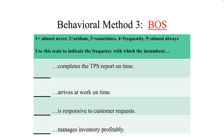The Behavioral Observation Scale, or BOS, is a behavioral approach to performance appraisal that measures the frequency of observed behavior. The rater is asked to indicate how often the incumbent engages in specific behaviors — for example, always, frequently, sometimes, etc. These behaviors must be job-related and derived from one's job description. However, the frequency of behavior may not indicate the quality of the behavior. For example, one can be very responsive to customer requests in that they respond, but the quality of the response — did they fix the problem or just acknowledge it? — is not measured. Nevertheless, it is an easy form of PA to use.